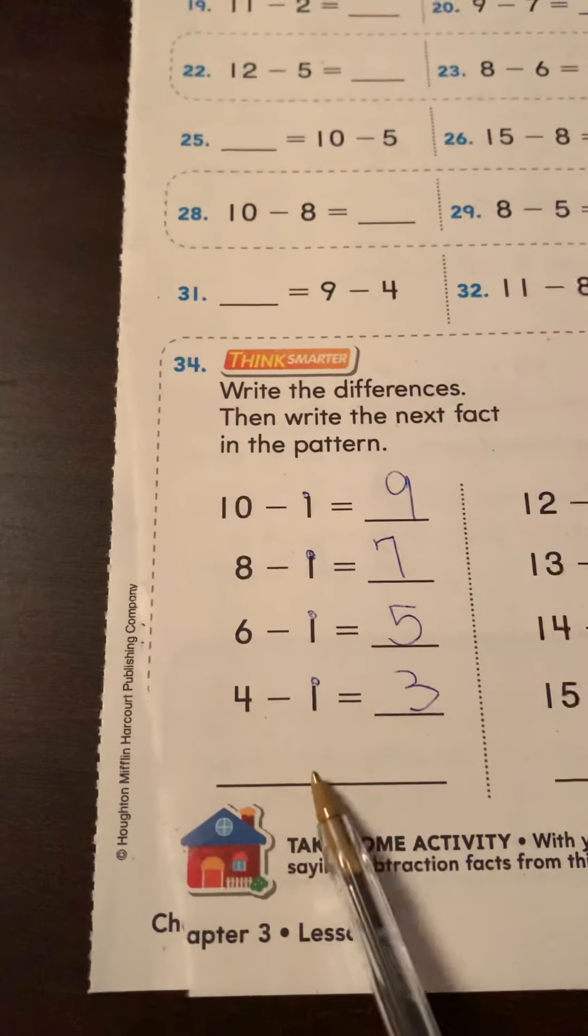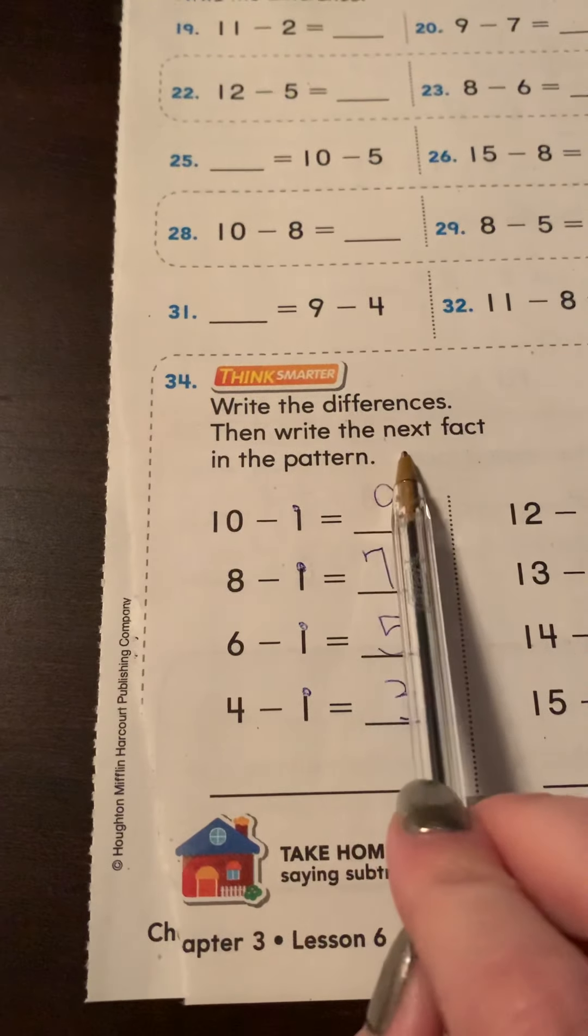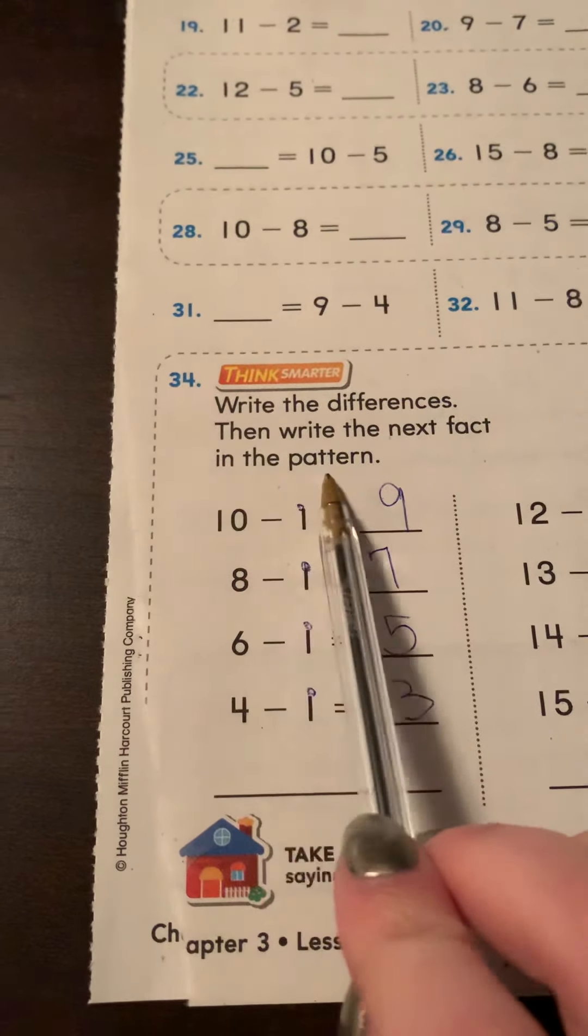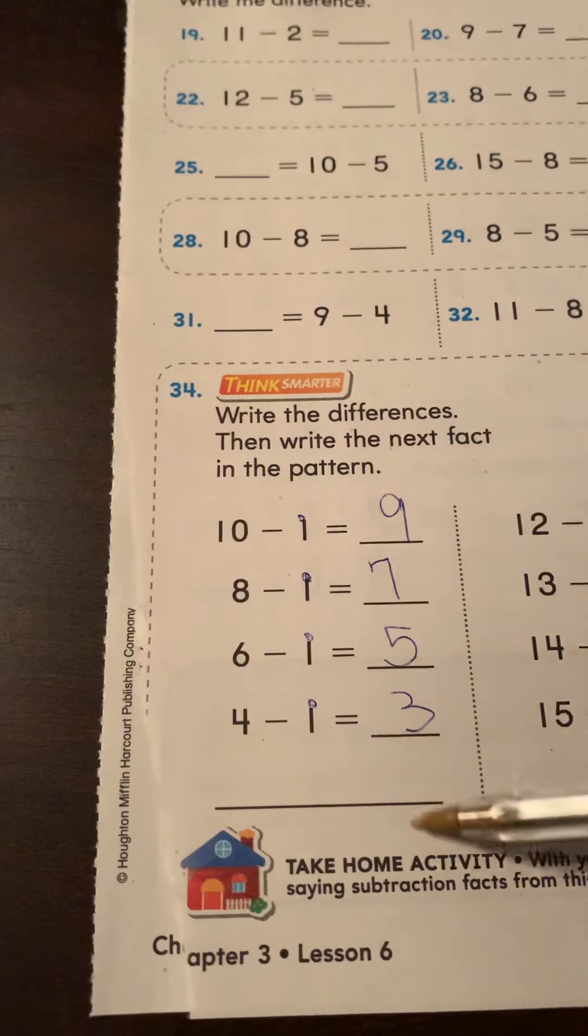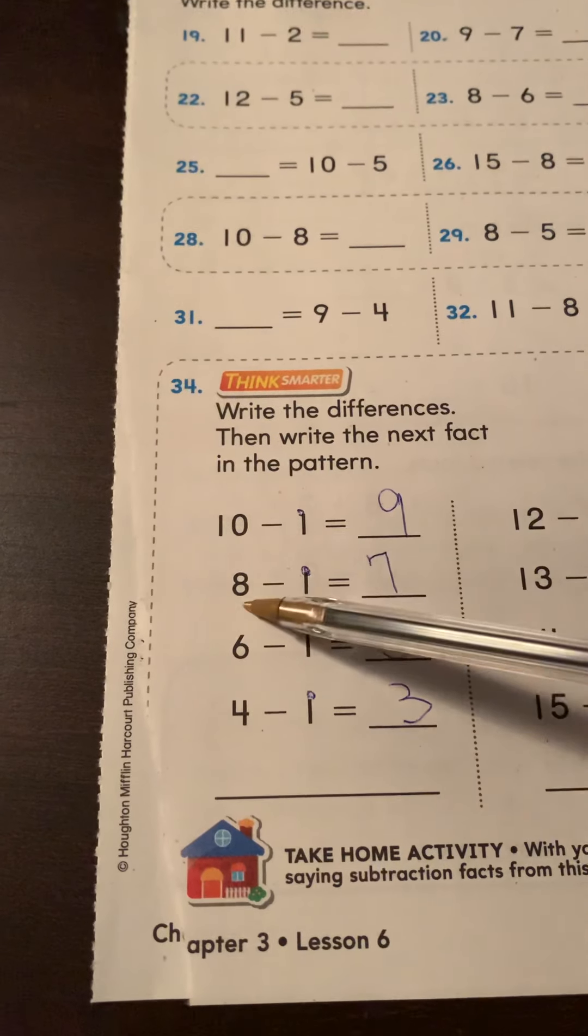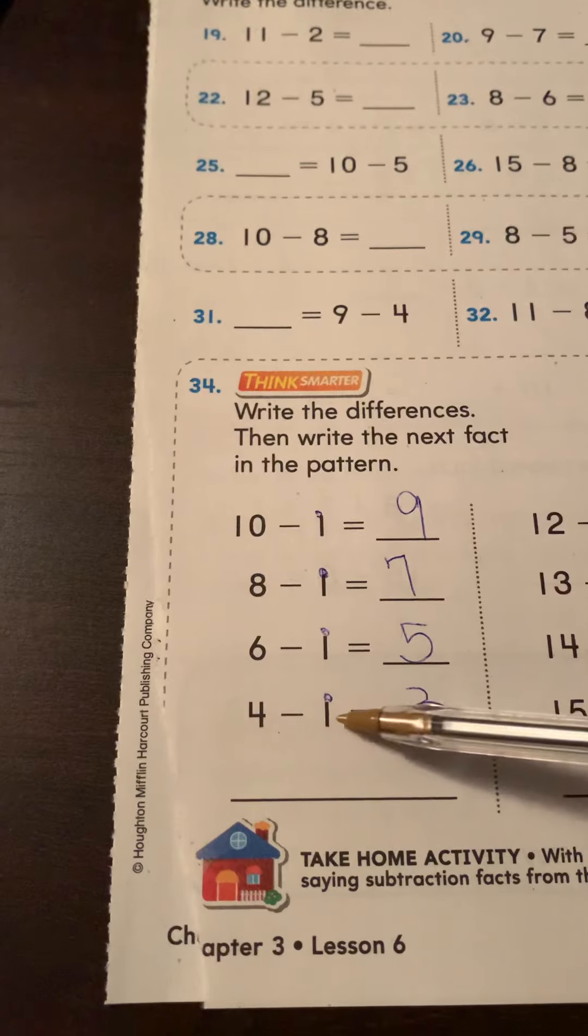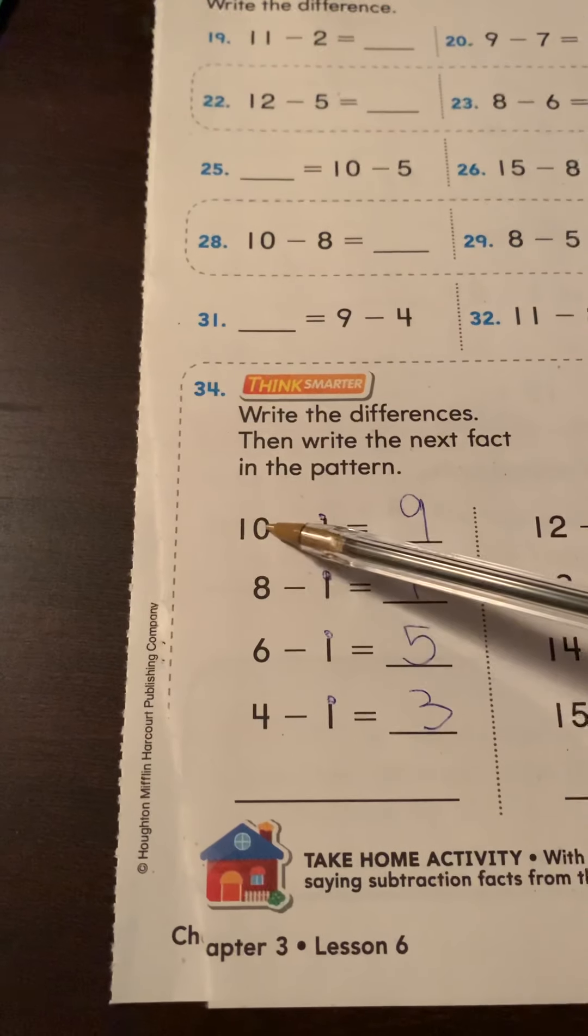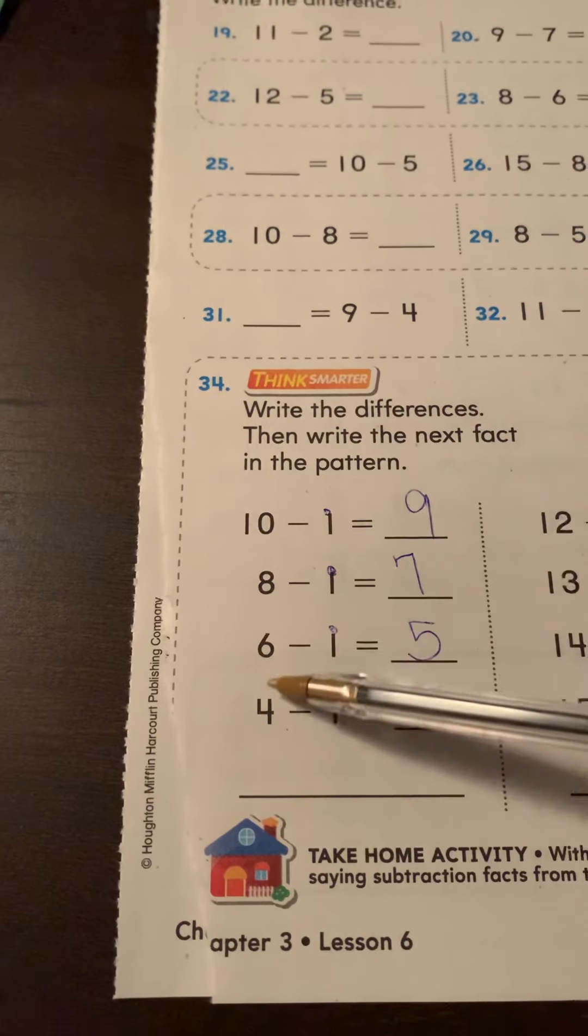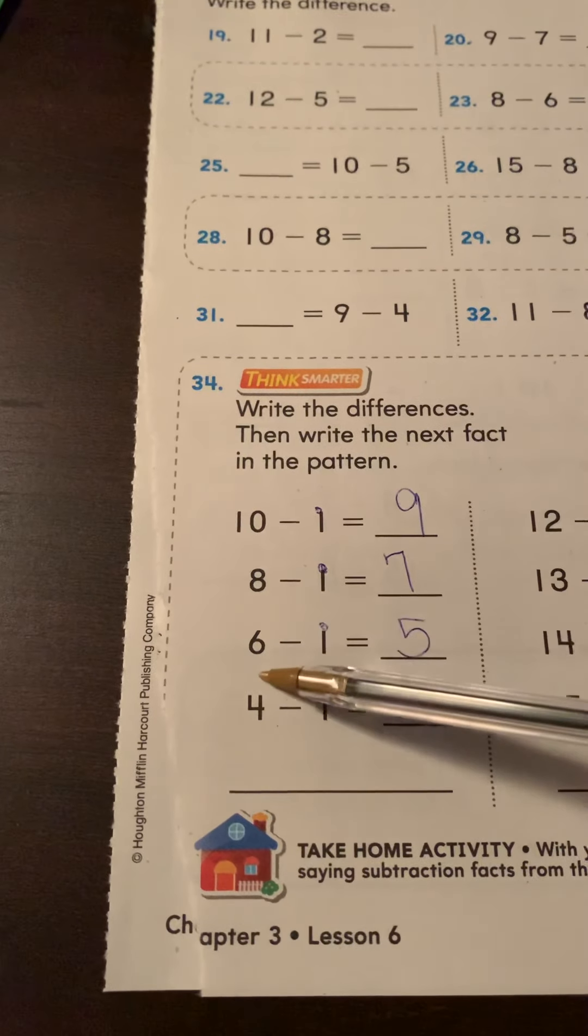Now down here, they want you to write the next, see the directions, write the next fact in the pattern. They want you to find a pattern in what they wrote. So they wrote 10 minus one, eight minus one, six minus one, four minus one. Look at this pattern here: 10, eight, six, four. Are the numbers getting bigger or smaller?